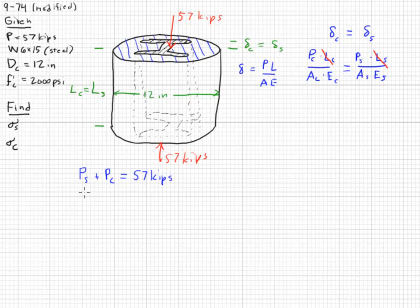So I'm going to rewrite this equation. Force of the steel is going to be equal to 57 kips minus the force on the concrete. So the top up here will be the force of the concrete over the area of the concrete. We'll deal with this in a second. The force on the steel, though, is 57 kips minus the force of the concrete. So now, we've removed one of the unknowns.